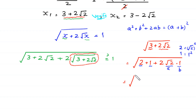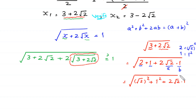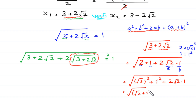We rewrite 3 plus 2√2 as (√2)² plus 2 times √2 times 1 plus 1². By the perfect square identity, this equals (√2 plus 1)², so square root of (3 plus 2√2) equals √2 plus 1.